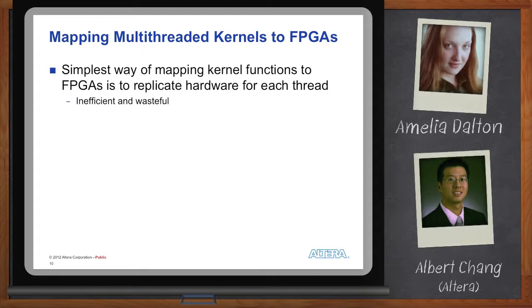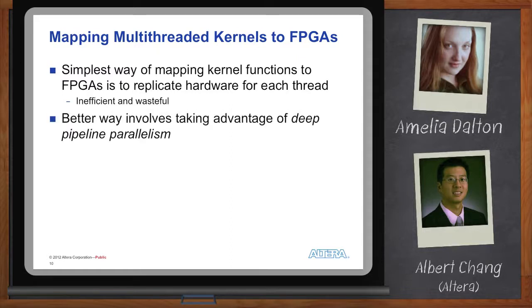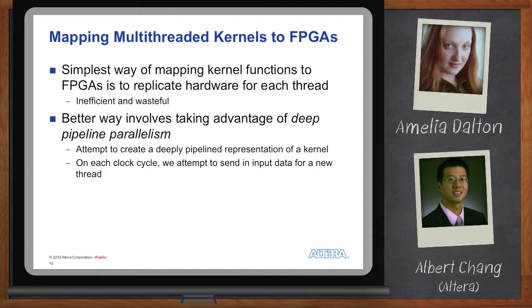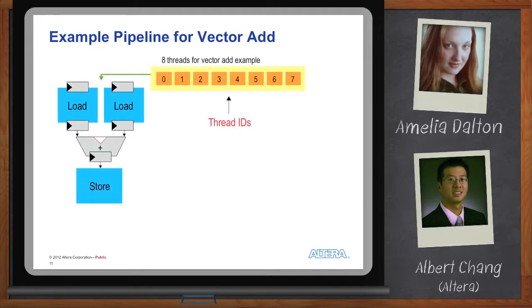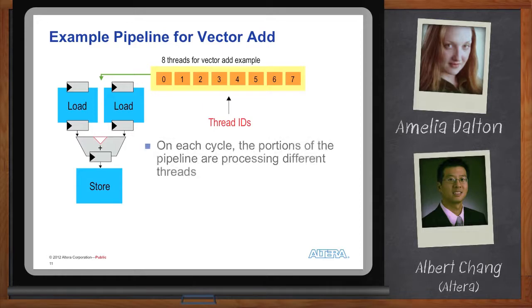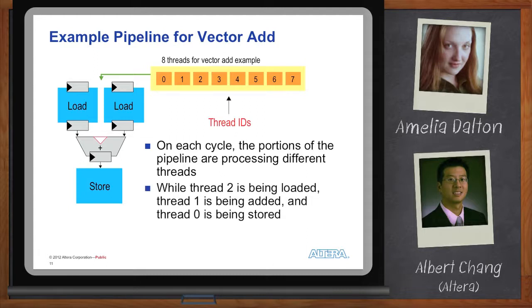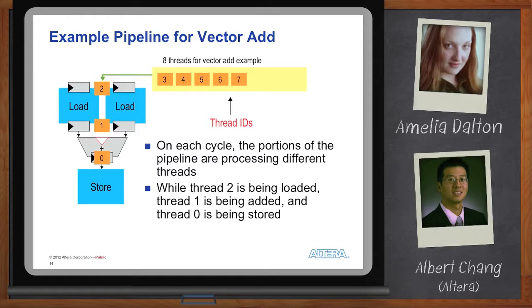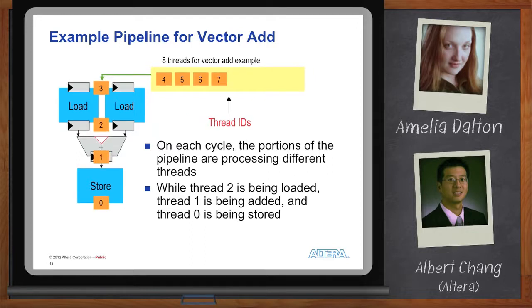For kernel pipelines, rather than simply replicating hardware logic to represent each kernel — which can be wasteful — Altera uses deep pipeline parallelism, which creates very deep pipeline kernels that execute multiple threads simultaneously. For example, in a vector add with eight threads: on the first clock cycle, thread zero is loaded into the kernel; on the following clock cycle, thread one is loaded while thread zero prepares for the add function; on the next clock cycle, thread two loads, thread one prepares for add, and thread zero completes the add and is stored back to memory. As long as you keep this pipeline full, you can expect a result on every clock cycle.